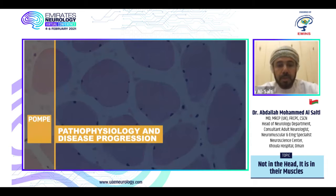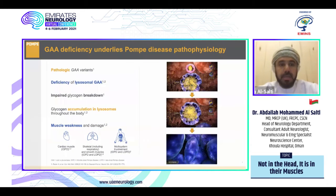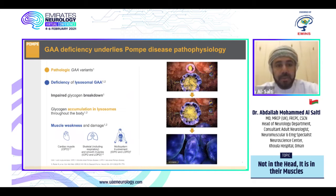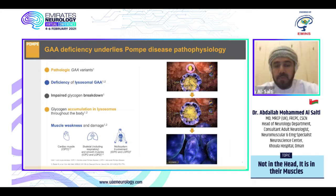Regarding the pathophysiology of the disease: pathogenic GAA variants lead to deficiency of lysosomal GAA, which ultimately impairs glycogen breakdown. Glycogen accumulates in lysosomes throughout the body, ultimately leading to muscle weakness and damage affecting cardiac muscles, skeletal muscles, including respiratory and smooth muscles, resulting in multi-systemic involvement.